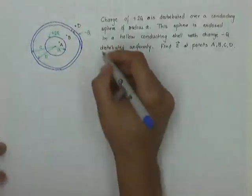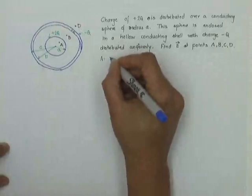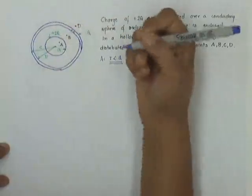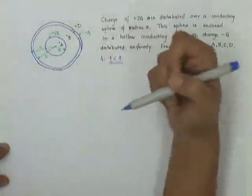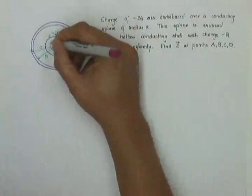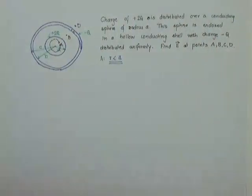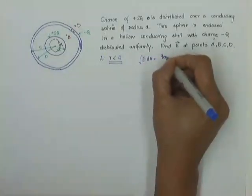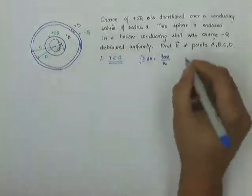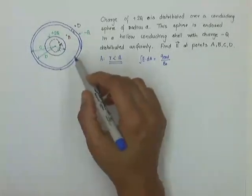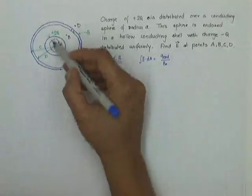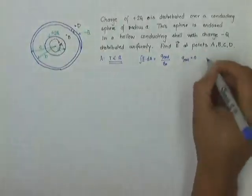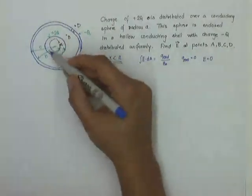For part 1, point A, the distance r from the center is less than a. Using Gauss's law, the charge symmetry is spherical, so my Gaussian surface is a sphere enclosed completely inside the conducting sphere. Since this is a conductor, all charge resides on the surface only. Therefore, q enclosed is equal to 0, which implies the electric field is 0 everywhere inside the solid conducting sphere.